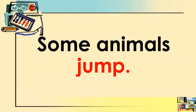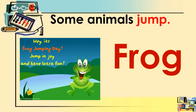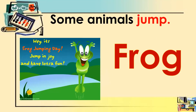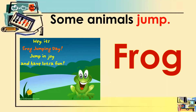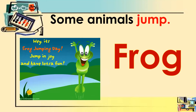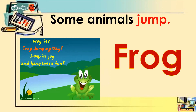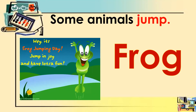Some animals jump. These are the animals that jump. The first one we have frog. Look at the picture — the frog is jumping. Let's spell the word frog: F-R-O-G, frog.